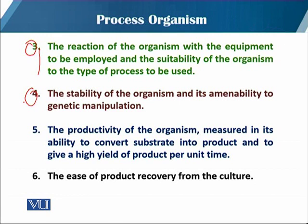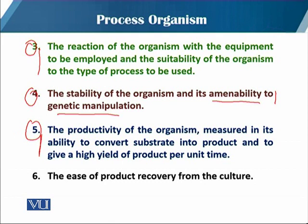The fourth criteria is the stability of the organism and its amenability to genetic manipulation. Sometimes a selected organism is not stable and loses its ability to produce a product with the passage of time. If we want to improve that organism, it must have amenability to genetic manipulation, since strain improvement should be on a genetic basis. The fifth criteria is the productivity of the organism, measured by its ability to convert the substrate into the product and to give a high yield of product per unit time.